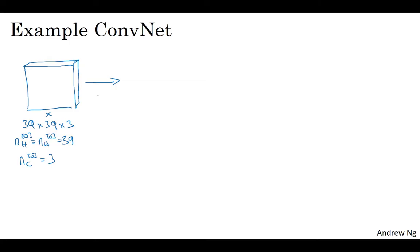Let's say the first layer uses a set of 3 by 3 filters to detect features. So f1 is equal to 3 because we're using 3 by 3 filters. And let's say we're using a stride of 1 and no padding, so a same convolution. And let's say you have 10 filters. Then the activations in this next layer of the neural network will be 37 by 37 by 10. This 10 comes from the fact that you use 10 filters.